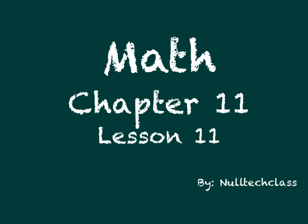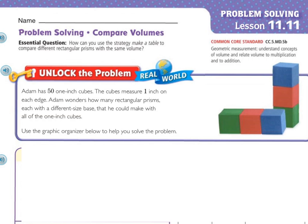Good morning. Today's lesson is Chapter 11, Lesson 11. Today we are going to be working with problem solving, comparing volumes. Our essential question: how can you use the strategy Make a Table to compare different rectangular prisms with the same volume?